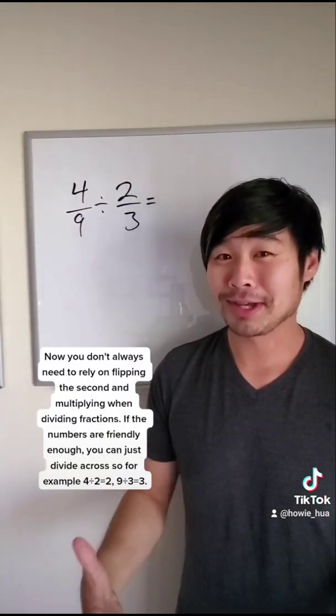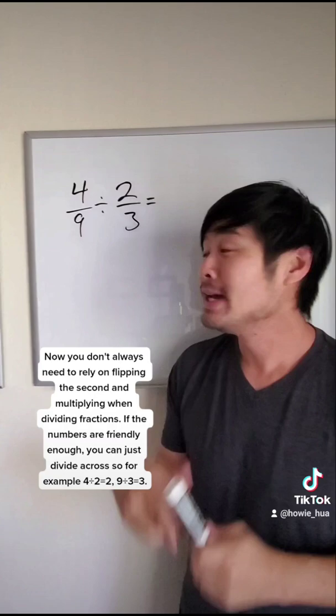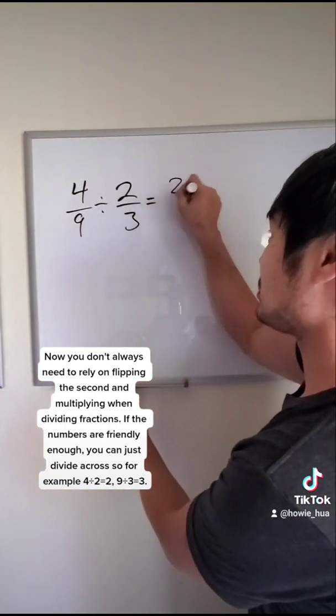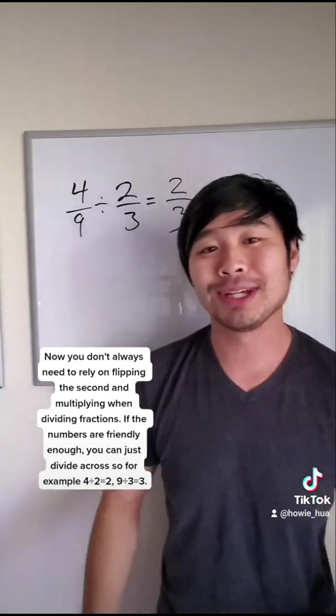Now, you don't always need to rely on flipping the second and multiplying when dividing fractions. If the numbers are friendly enough, you could just divide across. So for example, four divided by two is two, nine divided by three is three.